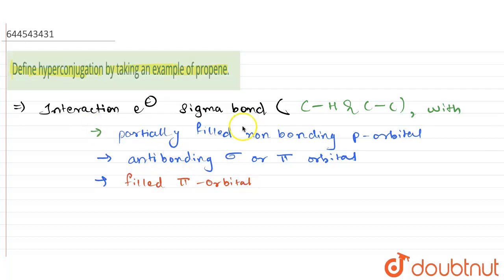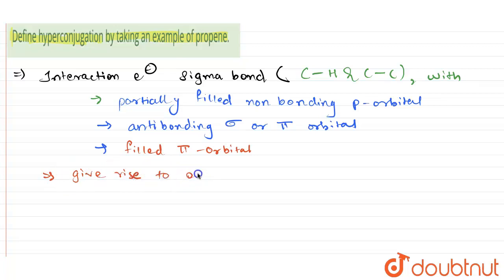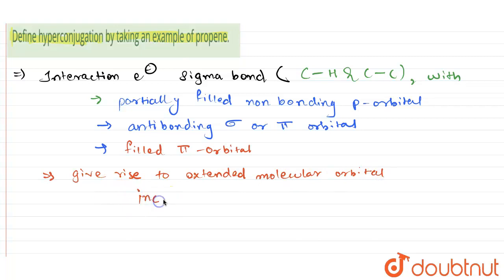The interaction of electrons in the sigma bond with these types of orbitals gives rise to an extended molecular orbital, which increases the stability of the system. This phenomenon is known as hyperconjugation.